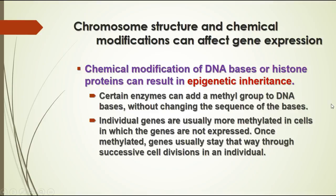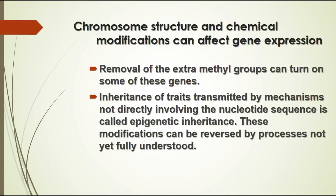There can also be chemical modifications of DNA and histones through something called epigenetic inheritance. Certain enzymes can add a methyl group to the DNA bases — this doesn't change the sequence but it does inactivate that area of the DNA. Once genes are methylated they generally stay that way through all cell divisions in the individual and can be passed on to offspring. Removing those methyl groups can turn on genes again, and traits transmitted by these mechanisms that don't involve nucleotide sequence can be passed to offspring.